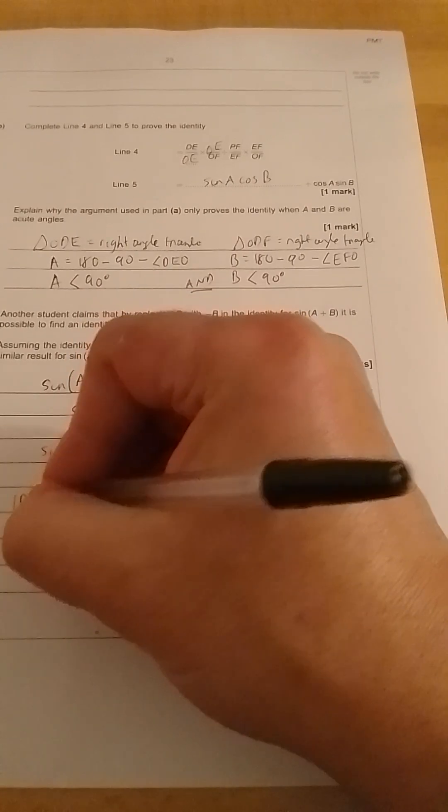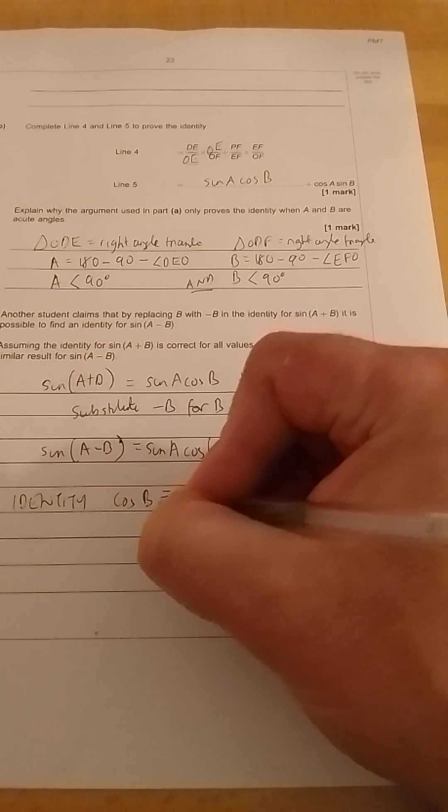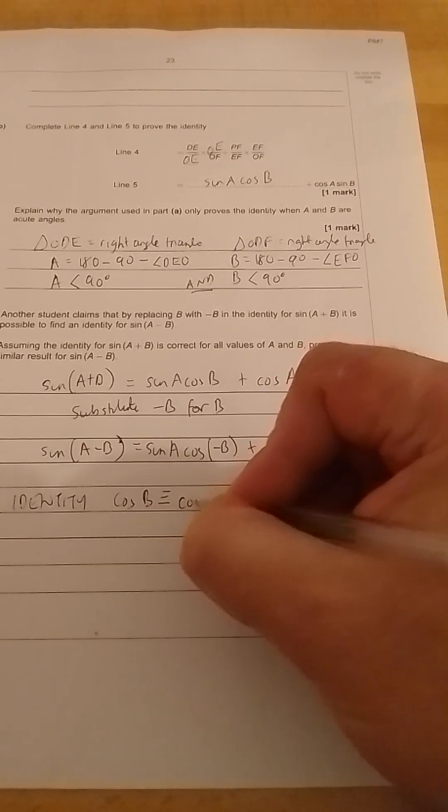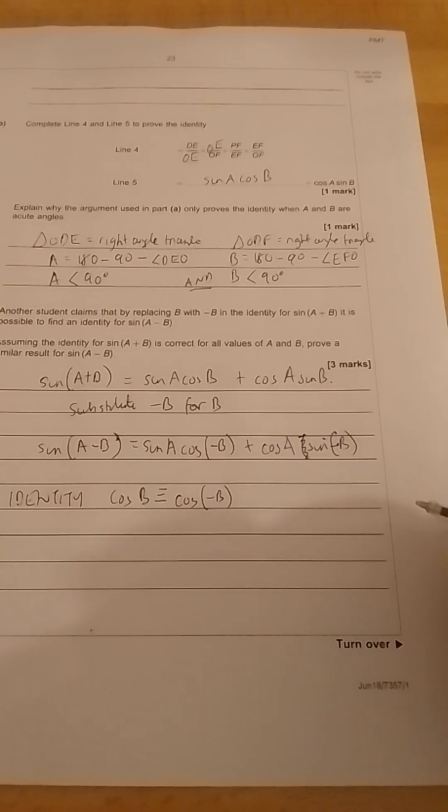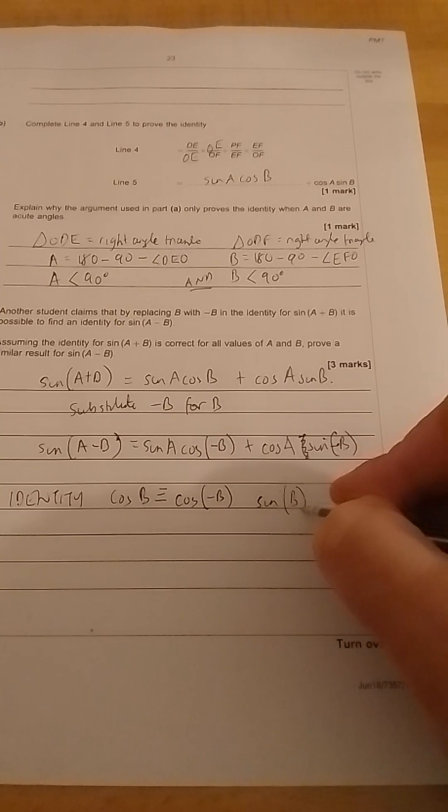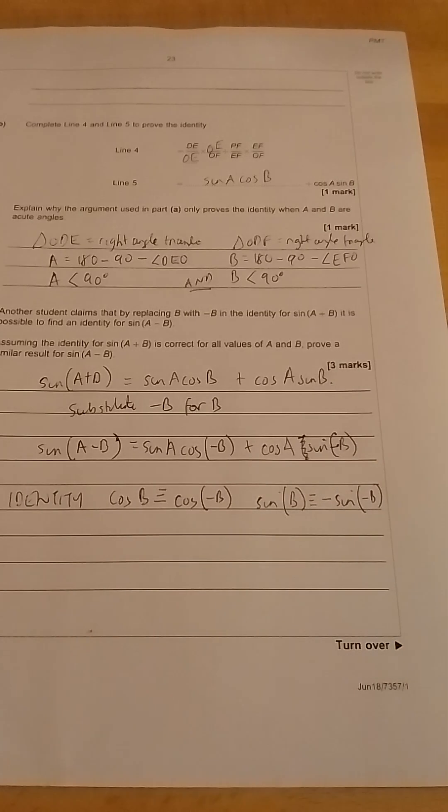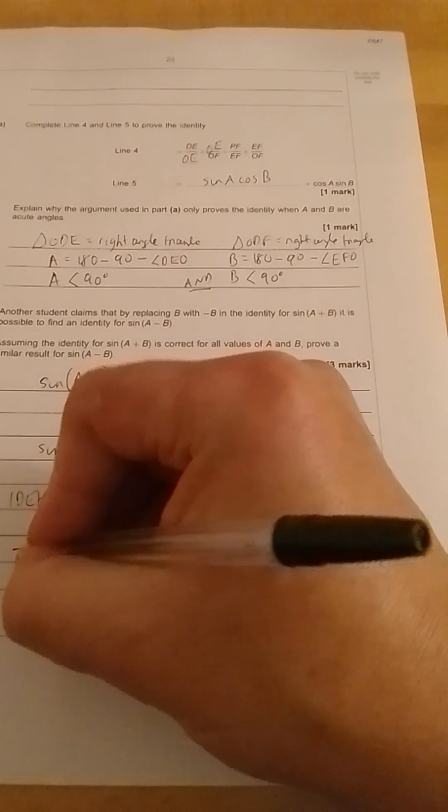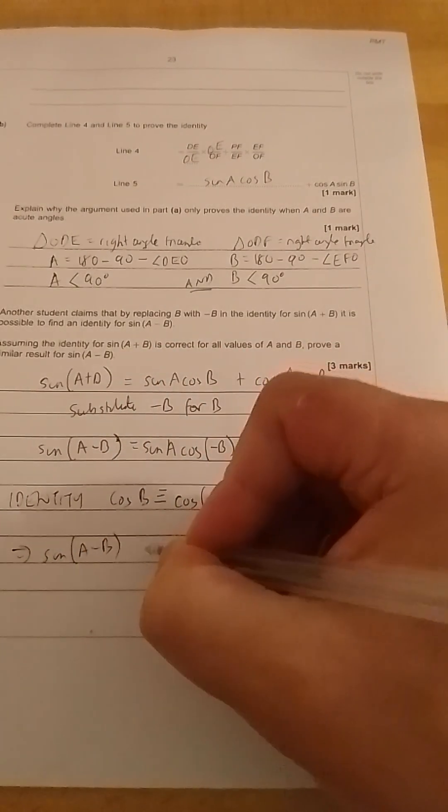Now we can use the fact that cos is an even function. So the identity cos B is equal to cos(-B). And we also have sine as an odd function. So in fact, we find that sin B is equal to minus sin(-B). So those two identities you should know. If you use that, we can see that, therefore, sin(A - B) is equal to...